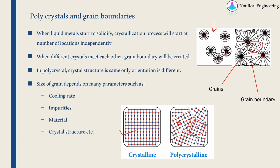All these small crystals are known as grains. The size of grains depends on many things such as cooling rate, number of impurities present, the material itself — including atom size — and the crystal structure.